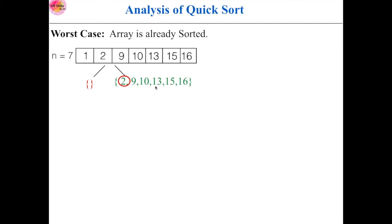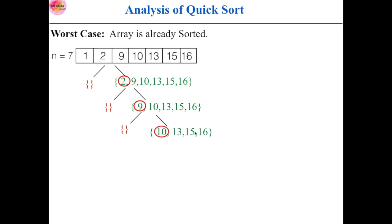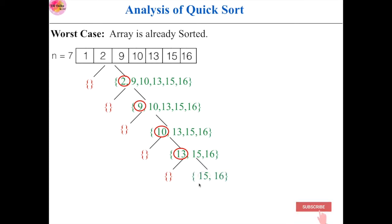Everything other than the pivot element goes into the right sub-array. Again selecting 2 as the pivot — no element is less than 2, so left sub-array is empty and the rest go right. Selecting 9 as pivot — no element is less than 9 so left sub-array is empty. Then 10 is the pivot — left sub-array is empty and three elements go right. Then 13 is pivot — left sub-array is empty and two elements go right. Then 15 is pivot — no elements go left and 16 goes right. All left sub-arrays are empty and the entire workload is in the right sub-array.